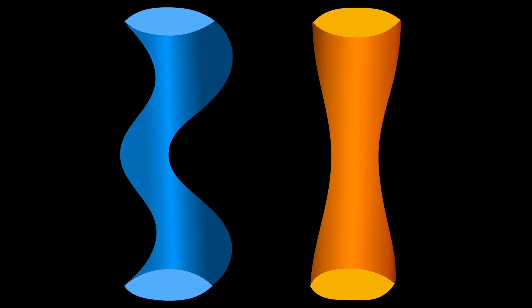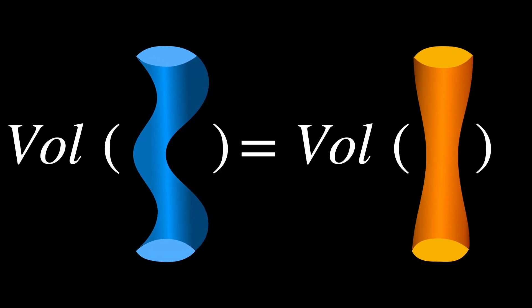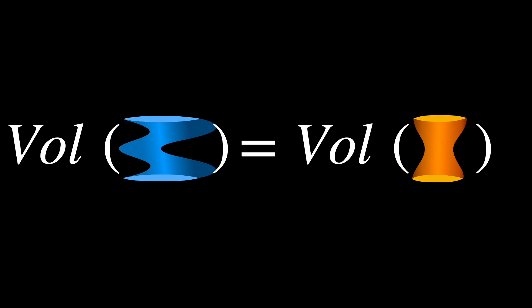Cavalieri's principle states if two solids are contained between two parallel planes and every plane parallel to these planes intersects both solids in cross-sections of equal area, then the volumes of the two solids are equal.